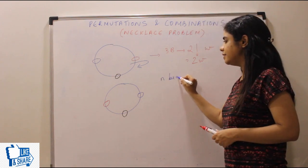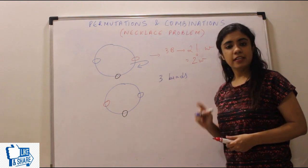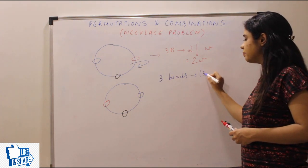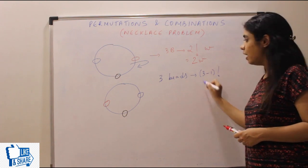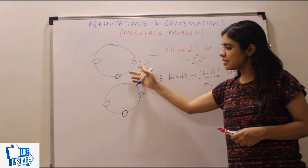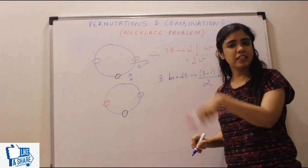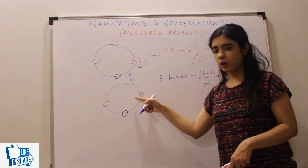So that is the reason n beads, or let's say in this case, three beads can be arranged in three minus one factorial upon two ways. Divide by two. Because wearing it this way or that way is the same thing.